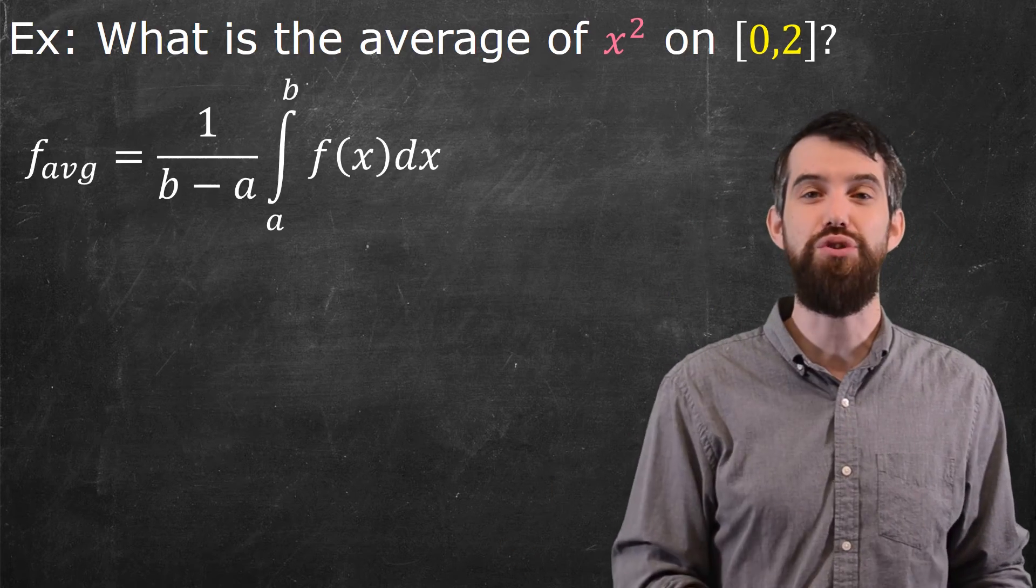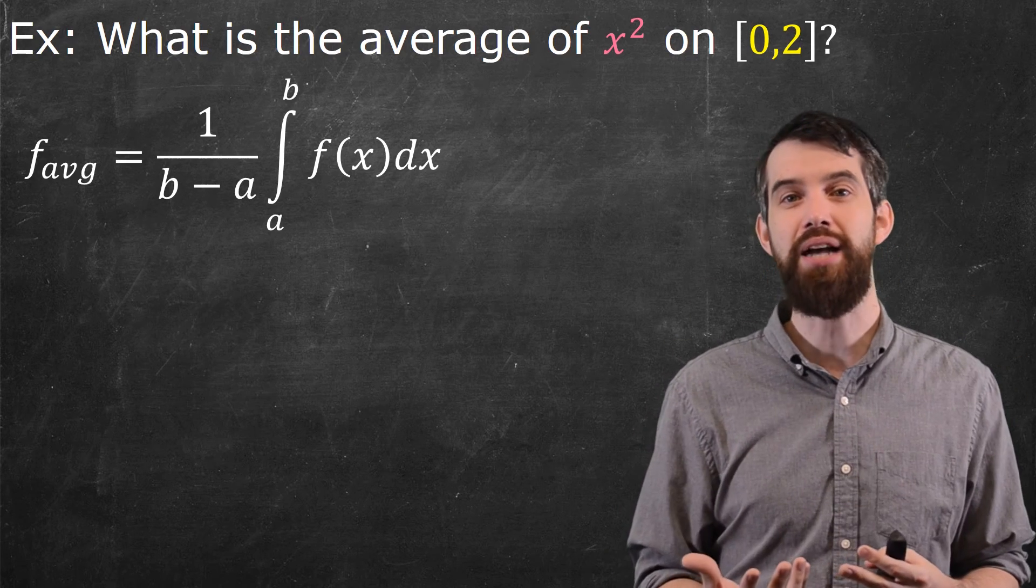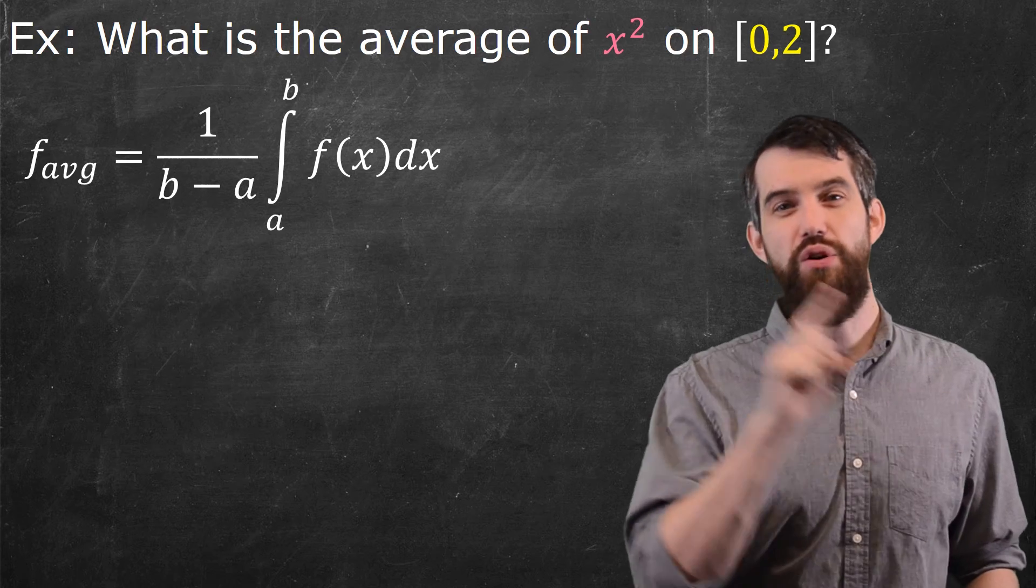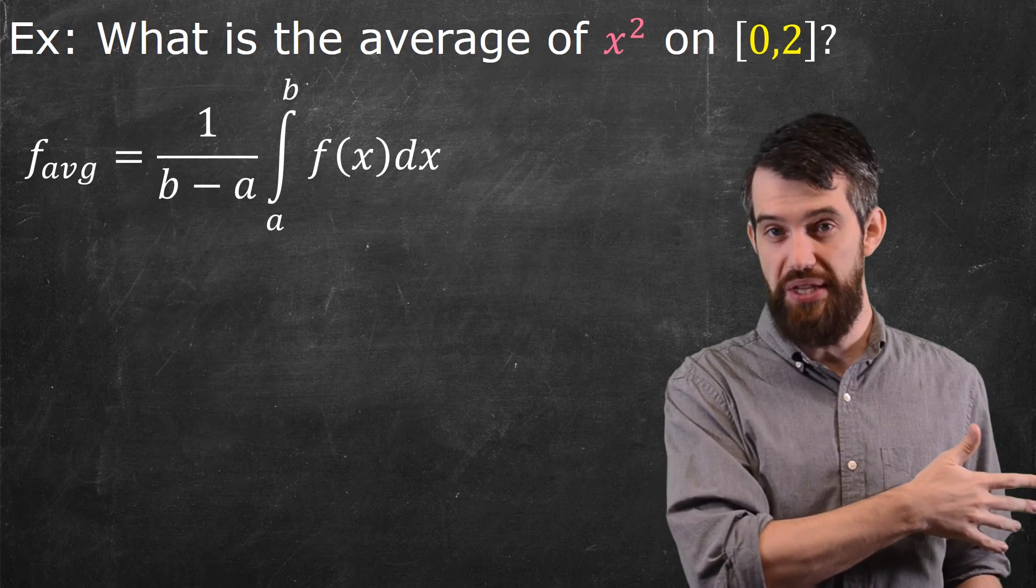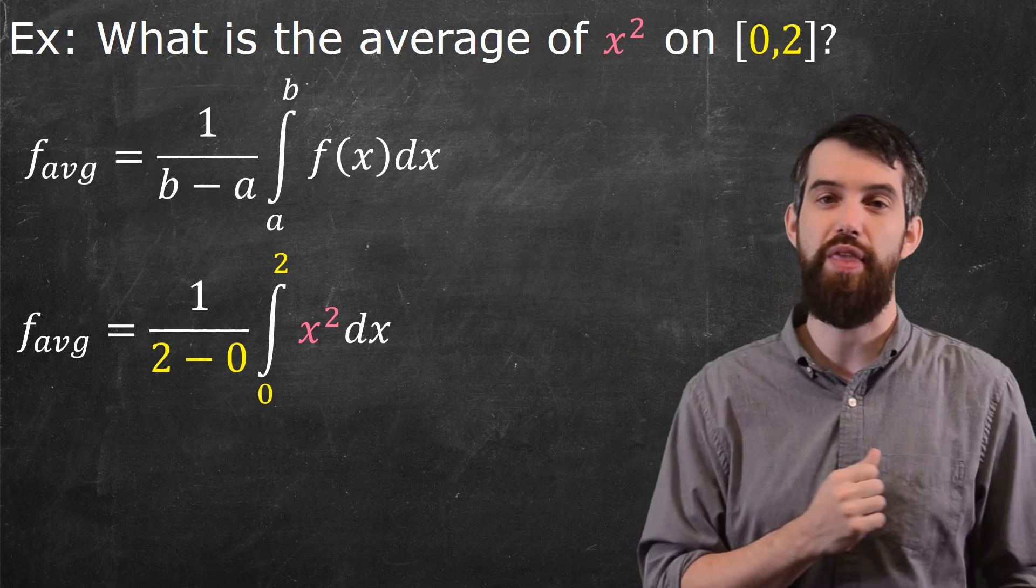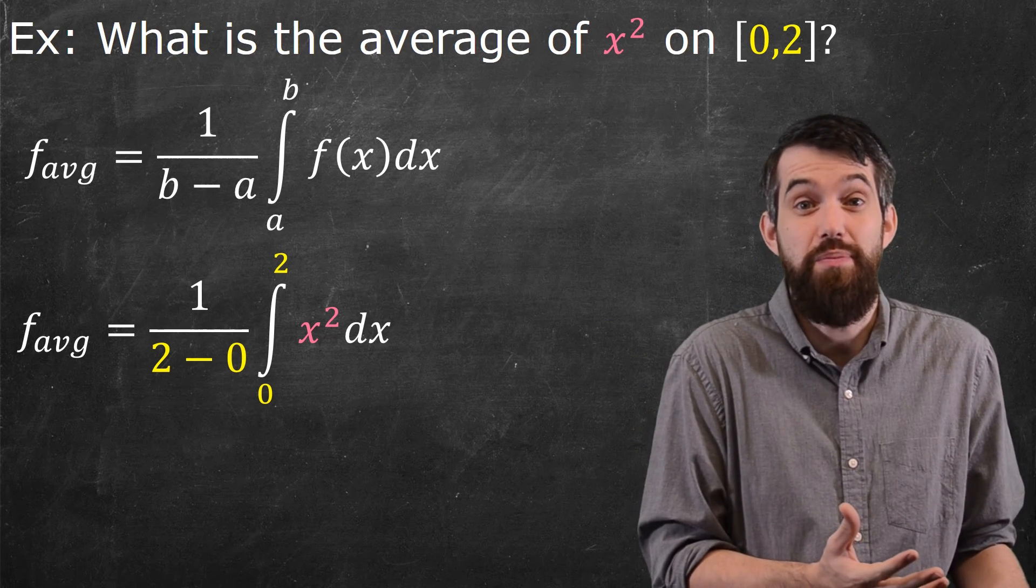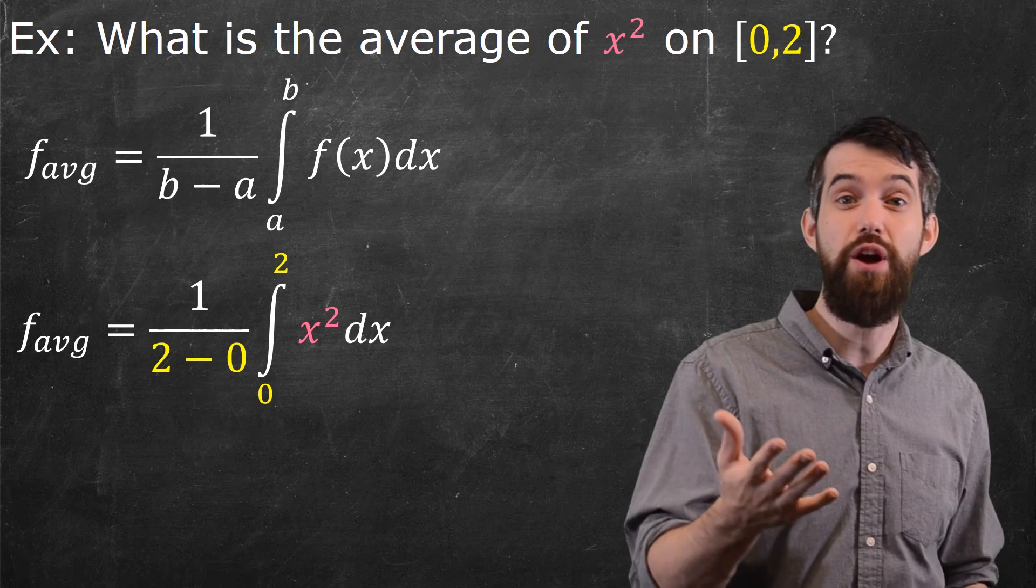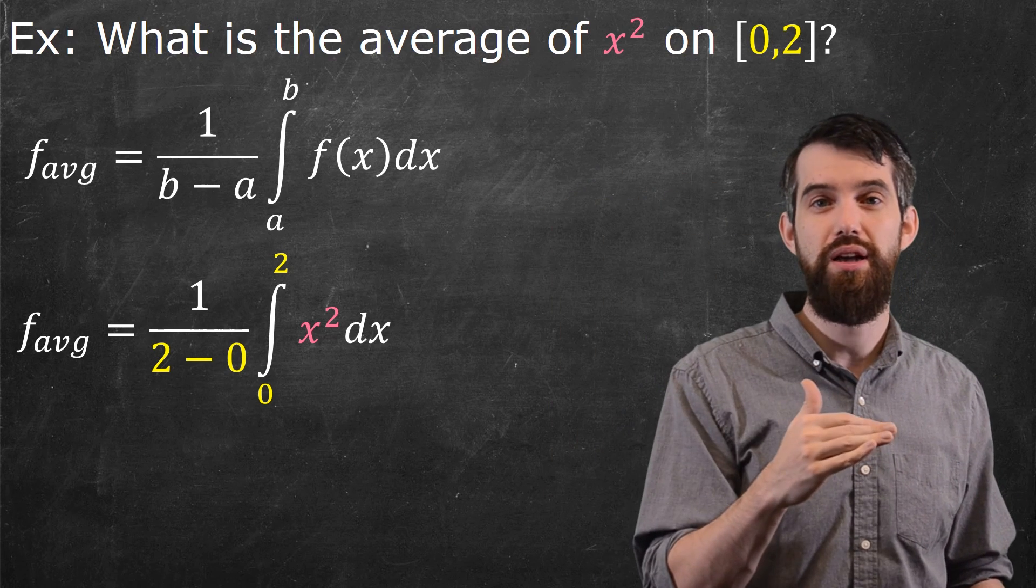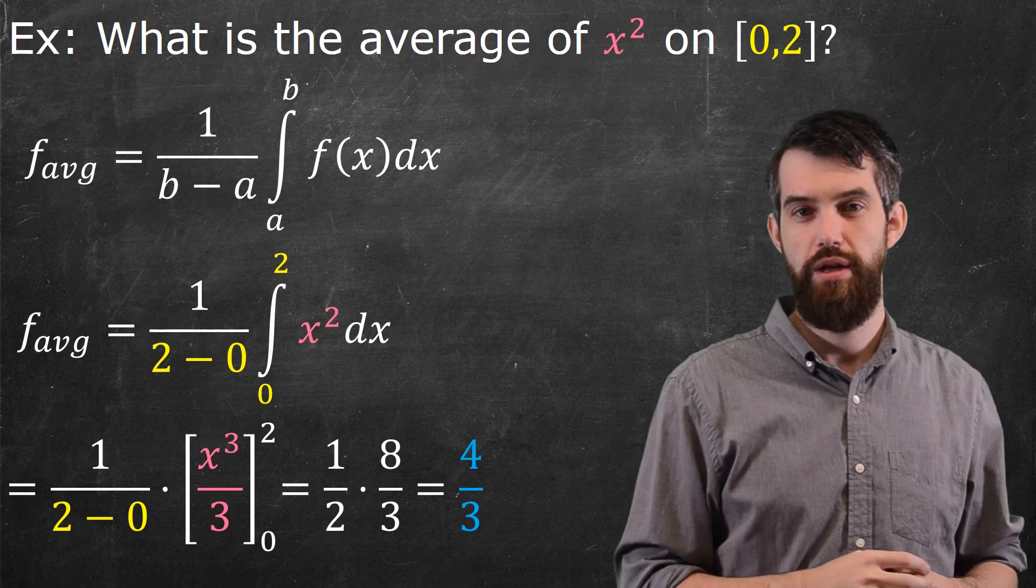Well, my generic formula, as you know, is the one over b minus a integral from a to b of f of x dx. The a and the b are the 0 and the 2, so I plug those in. And I plug in the x squared for my function, so that just leaves me with this. And then if I actually want to compute out what this is going to be, well, the integral of x squared is x cubed over 3, so I can plug in the values of 2 and 0, and I get 4 thirds.